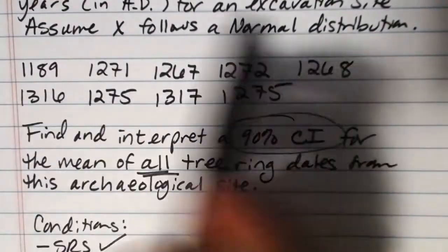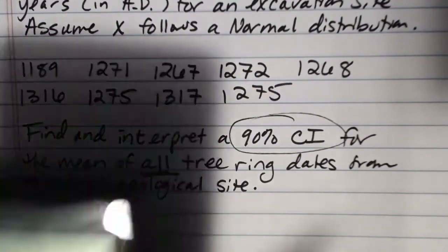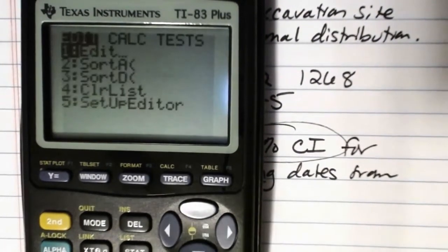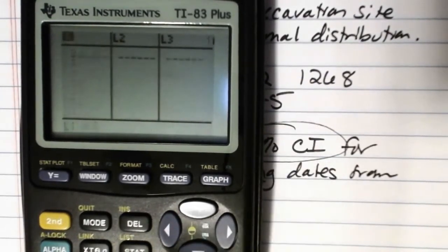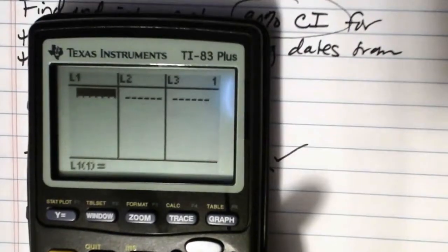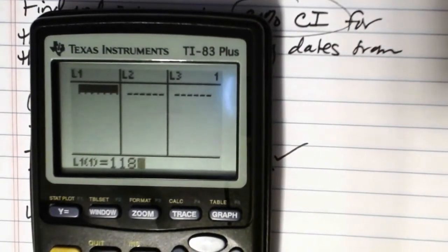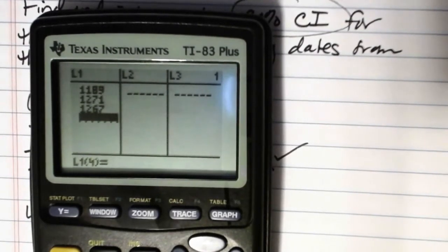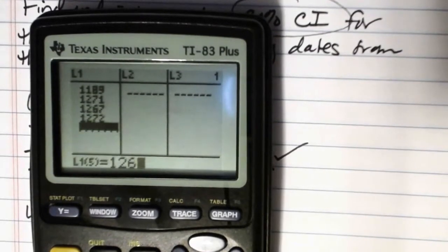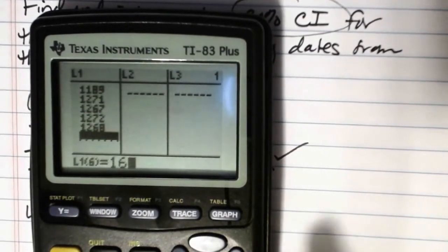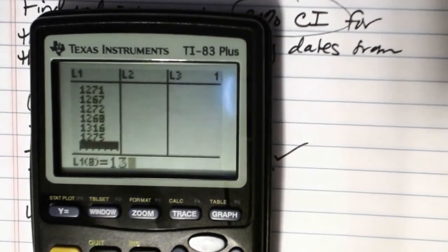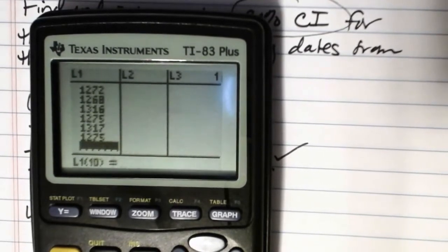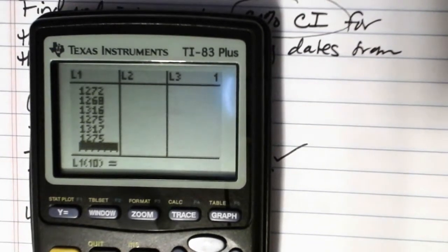So here's how this will work. First thing, because we've been given data here rather than summary statistics, we actually need to put those pieces of data into the calculator. So we'll need to go into stat and edit. If you have stuff in there, you'll want to clear it out. And then we're going to put those tree ring dates in here. So we had 1189, 1271, 1267, 1272, 1268, 1316, 1275, 1317, and another 1275. So that's what we had for our tree ring dates.